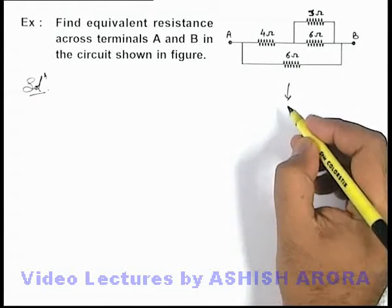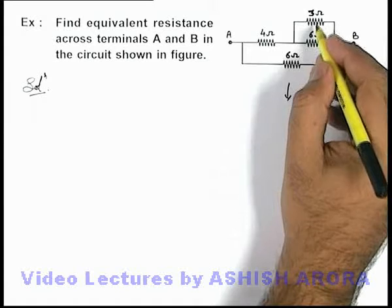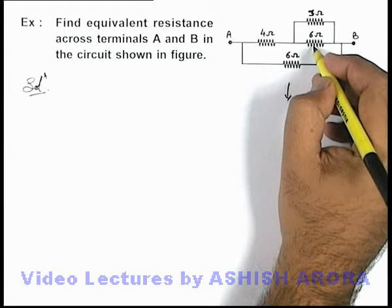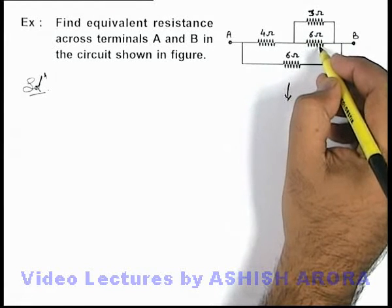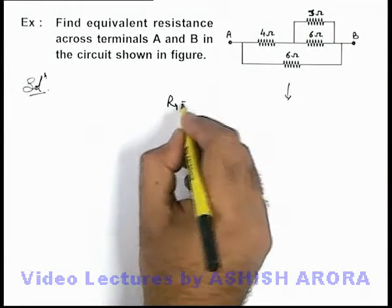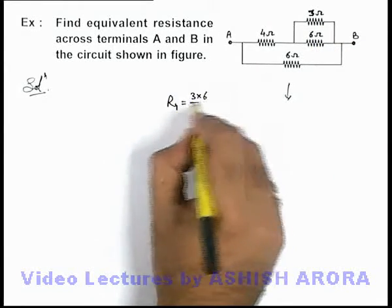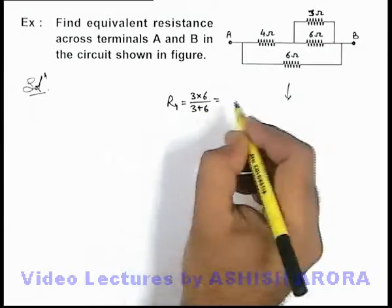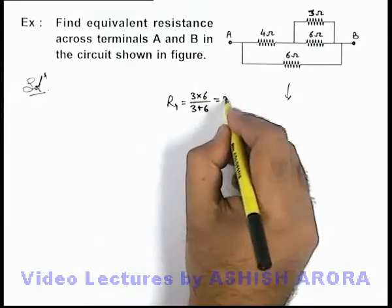We just have a look on the situation. Here you can see that 3 ohm, 6 ohm resistance are connected in parallel combination. Then we can say the equivalent resistance for this group can be written as R1 which is 3 into 6 by 3 plus 6. This can be written as 18 by 9 which is 2 ohm.